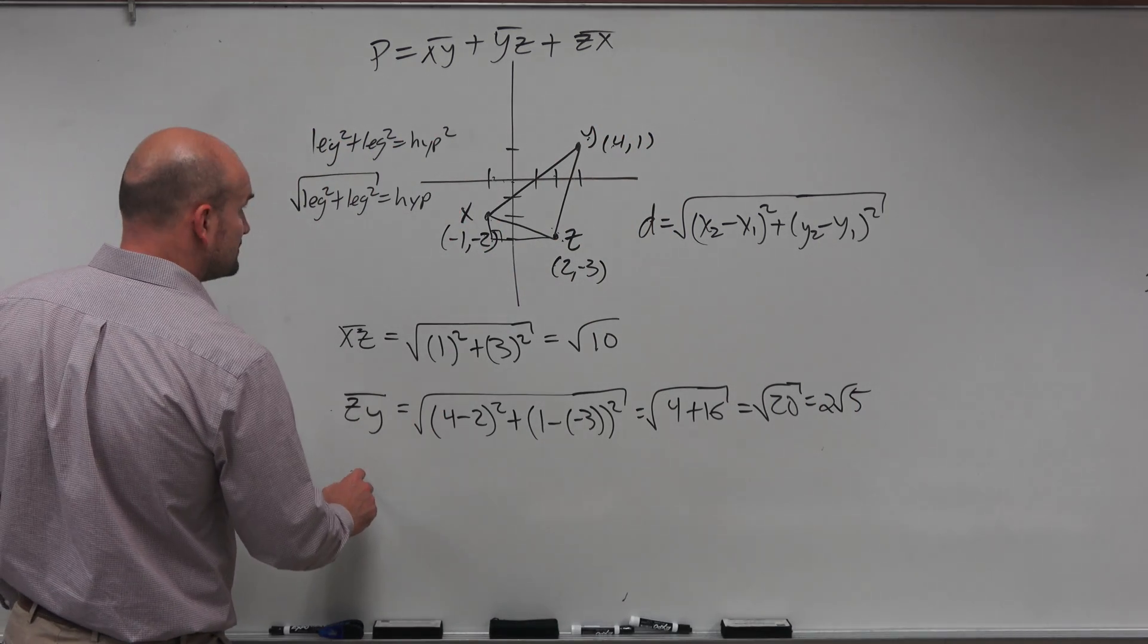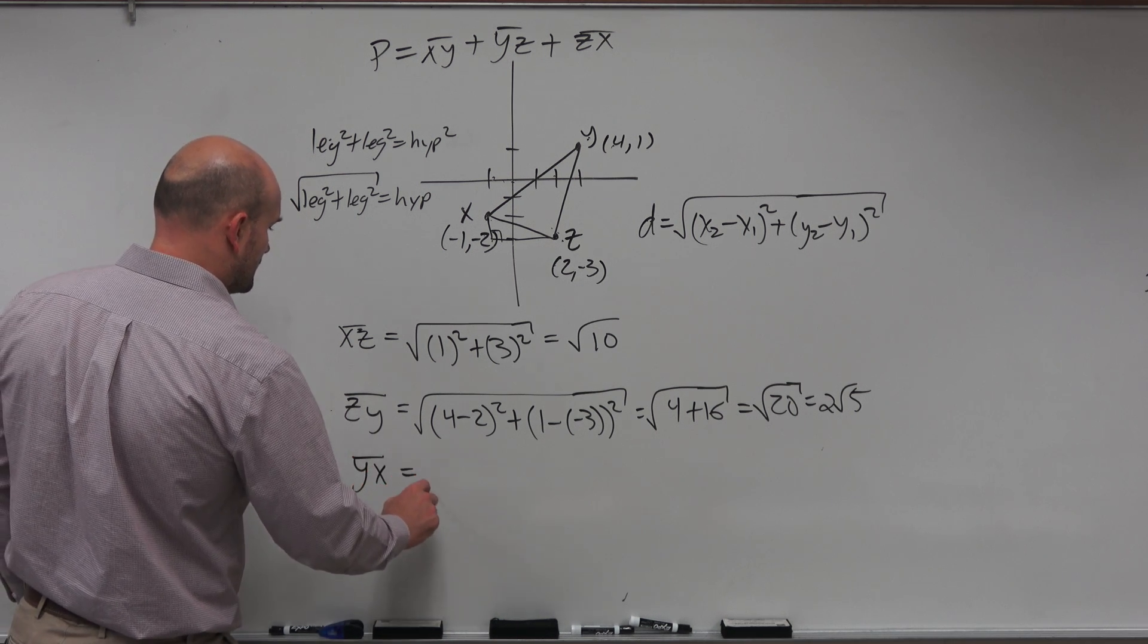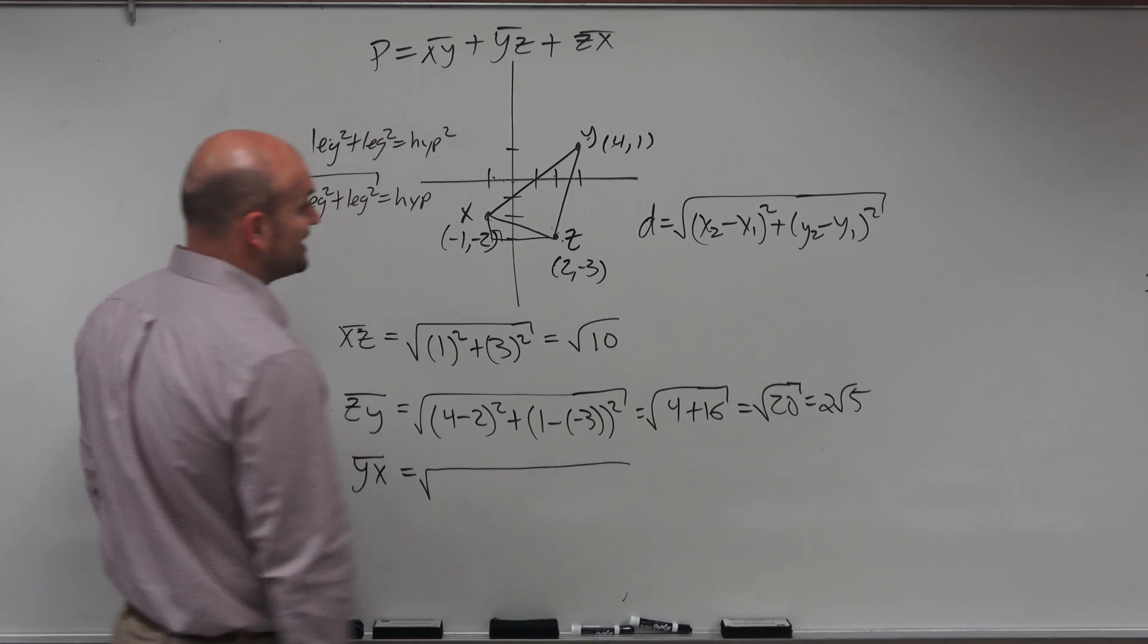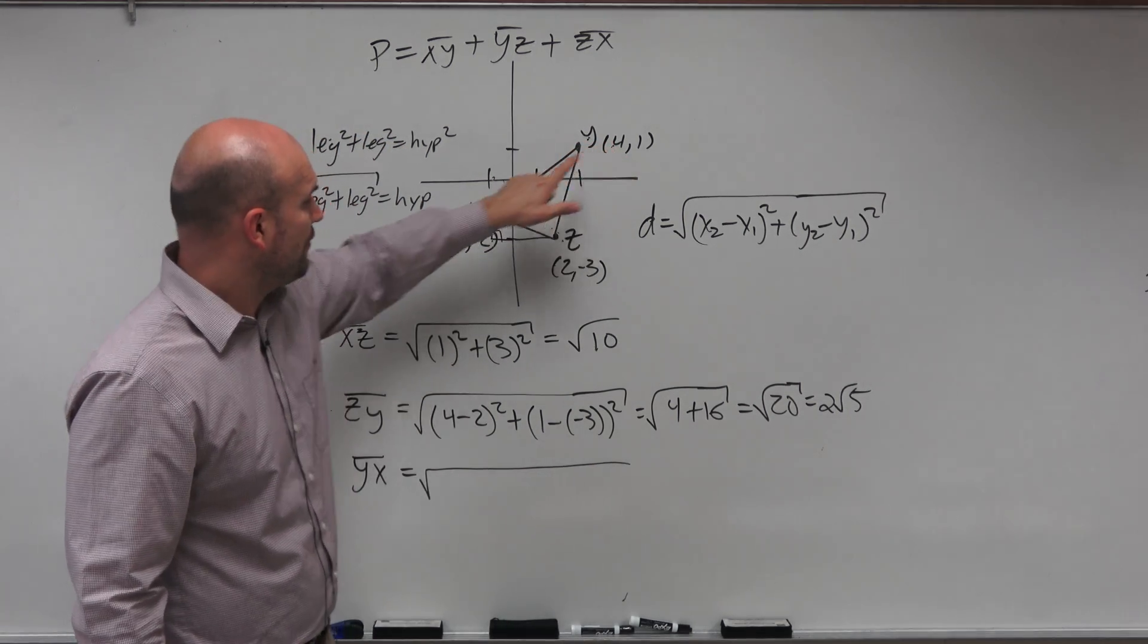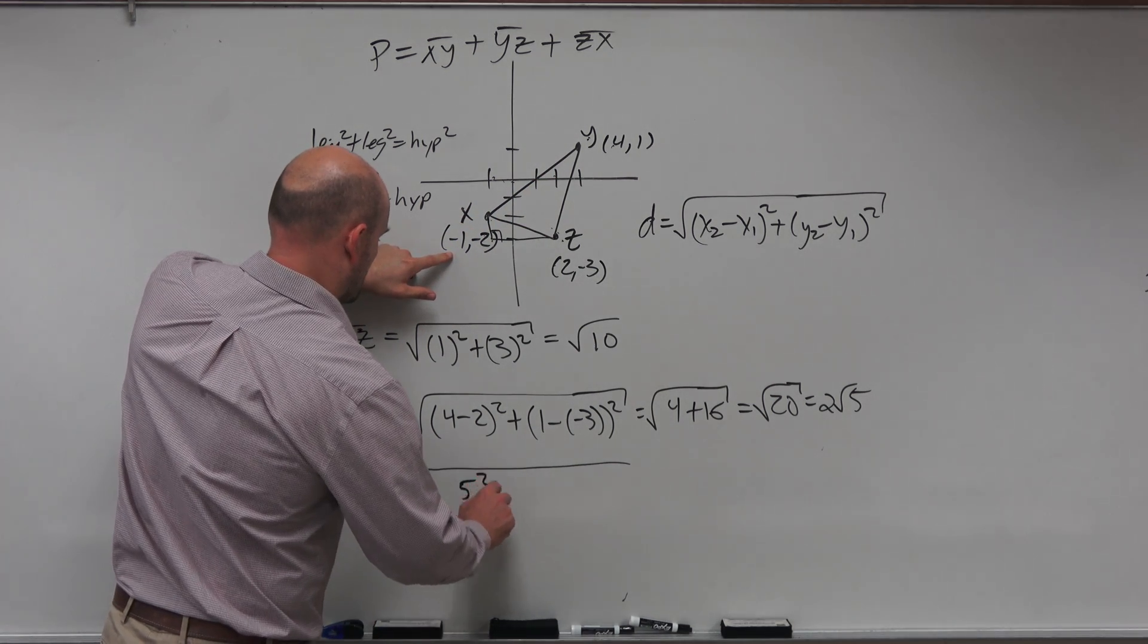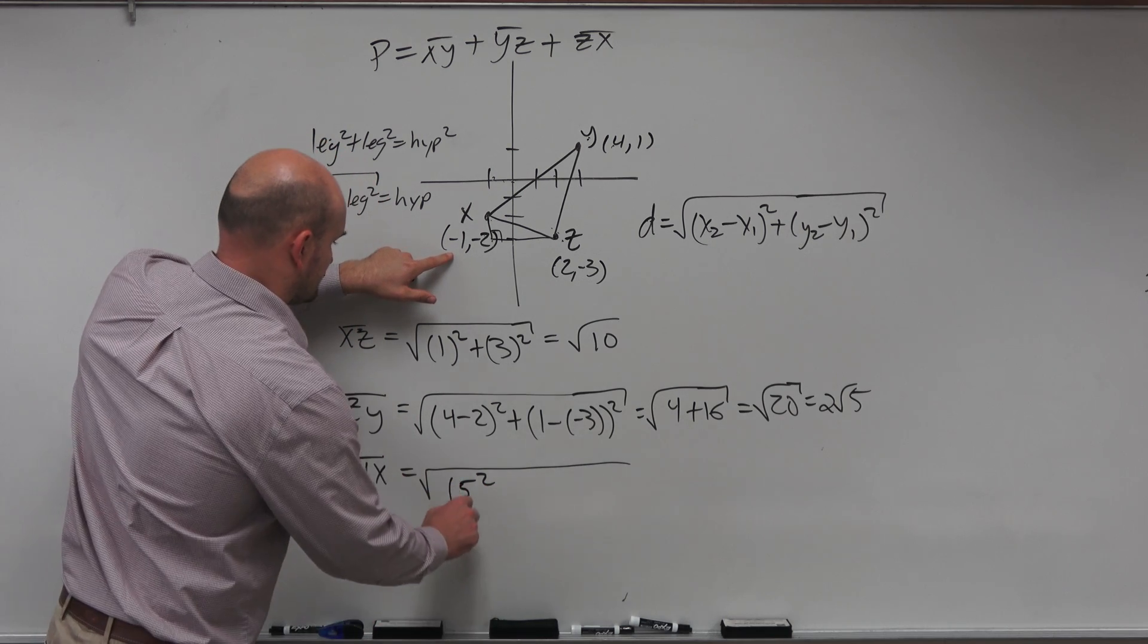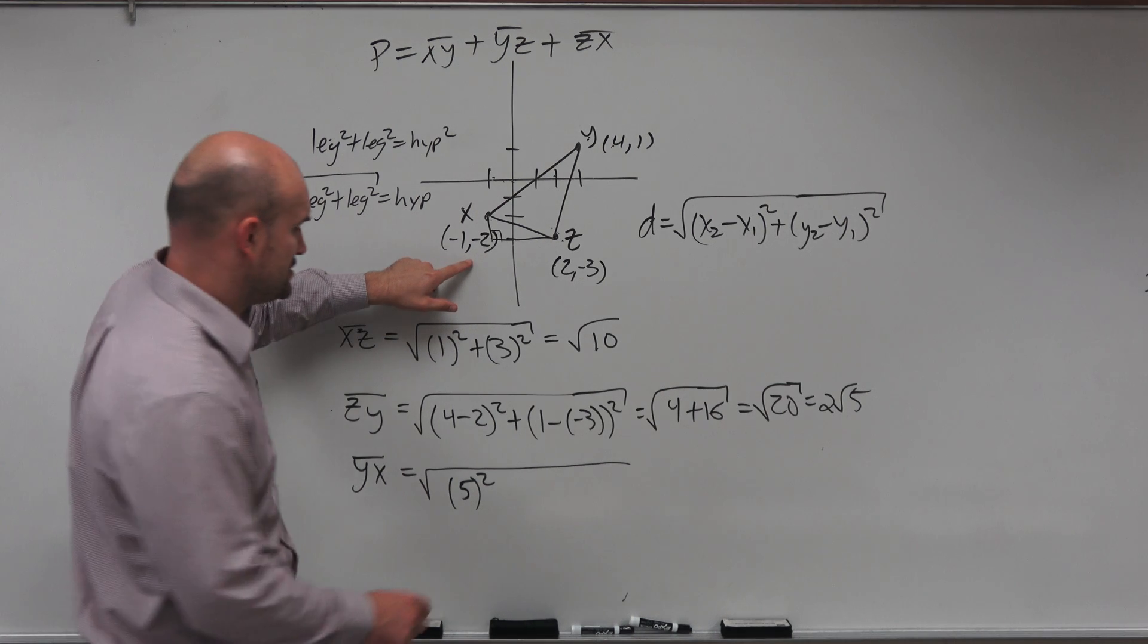And then the last one, let's just do y, x. All right. So if I want to find the distance here, again, I'm going to do the same thing. But I'm just going to kind of do this in my head now. Now, 4 minus a negative 1 is going to be 5. And then here, I have 1 minus a negative 2, which is going to be 3.